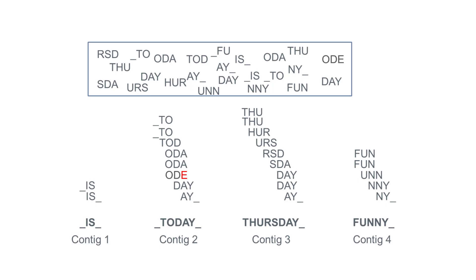To summarize: we use read mapping if we have a reference that is close enough to our sample, and if we are interested in SNPs, indels, and gene content. We use de novo assembly if we have no reference genome available, when we want a complete genome, or when we are interested in larger structural variants.